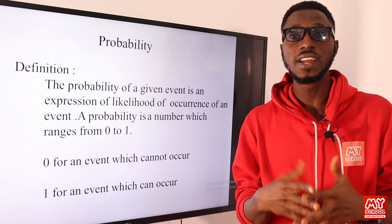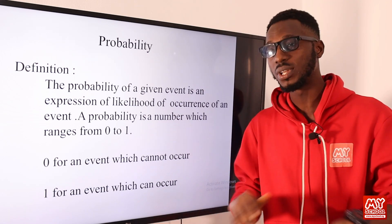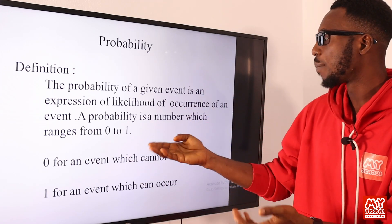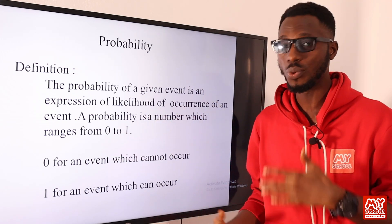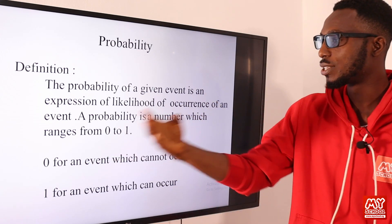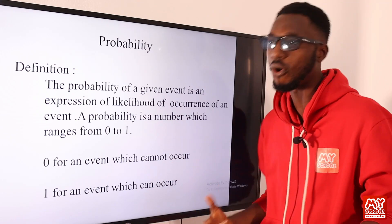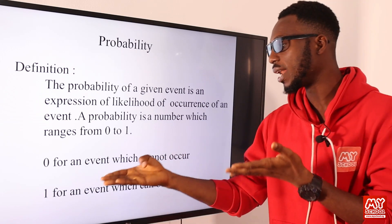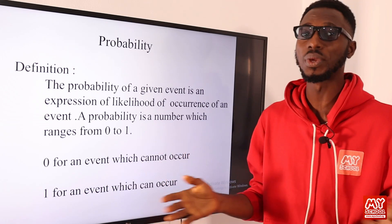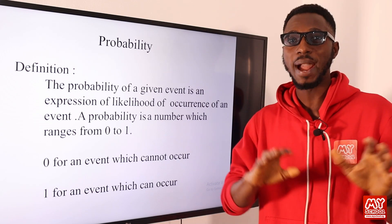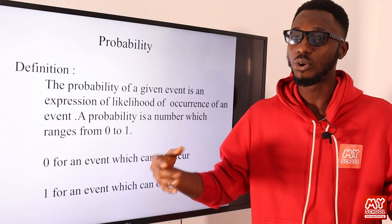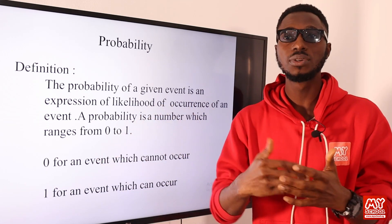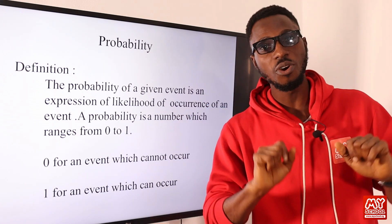The probability of a given event is an expression of likelihood of the occurrence of an event. What is the likelihood that an event will occur? That is actually probability — the measure of the tendency for that event to occur. The probability is a number which ranges from 0 to 1. Zero stands for an event which cannot occur, and 1 represents an event which can occur.